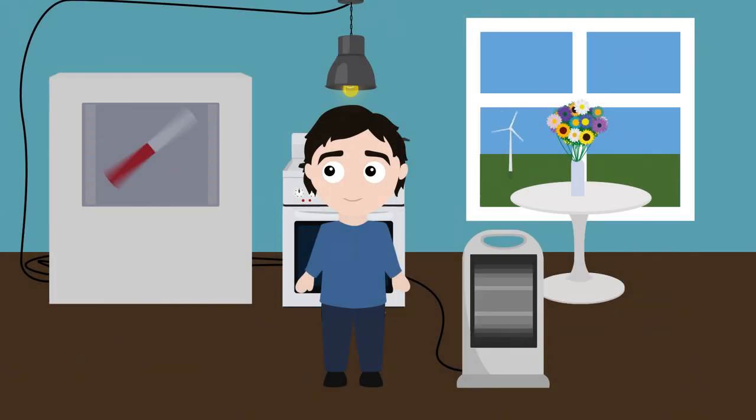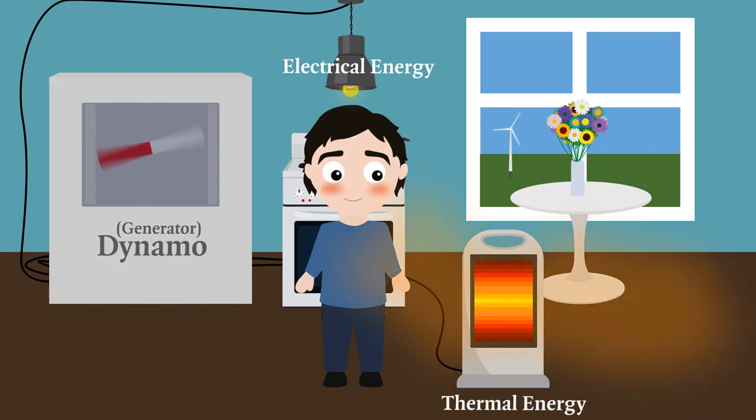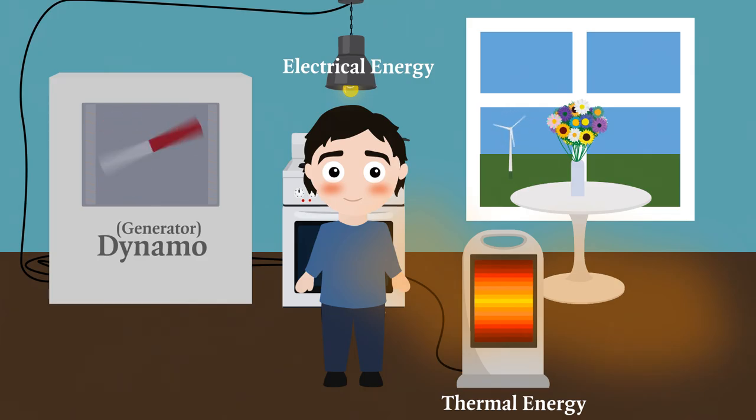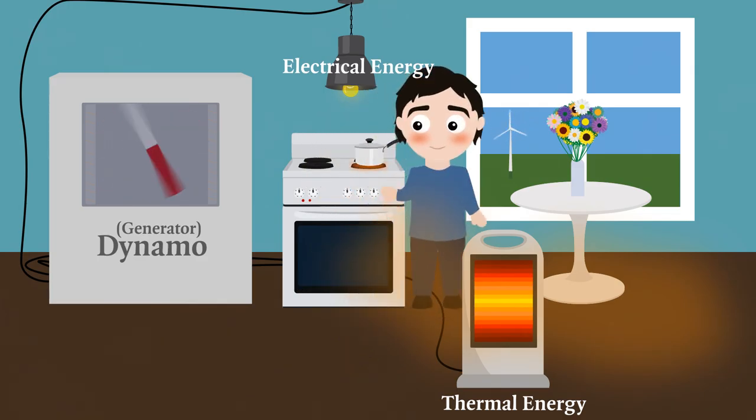But when you get home, it's dark already, so you turn on your dynamo. The dynamo or generator produces electrical energy to power your house as well as thermal energy to warm you up. Some of that electrical energy will then be used when you turn on your stove to cook your dinner. The electrical energy is then converted to thermal energy to cook your food.